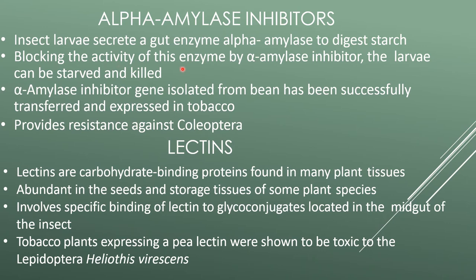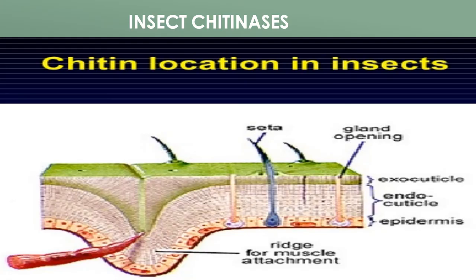Alpha amylase inhibitors: insect larvae secrete a gut enzyme, alpha amylase, to digest starch. Blocking this enzyme activity with alpha amylase inhibitors can starve and kill the larva. An alpha amylase inhibitor gene isolated from bean has been successfully transformed and expressed in tobacco, providing resistance against Coleoptera. Lectins are carbohydrate-binding proteins found in many plants, abundant in seeds and storage tissue. They involve specific binding to glycoconjugates in the insect midgut. Tobacco plants expressing a pea lectin were shown to be toxic to Lepidoptera insects.